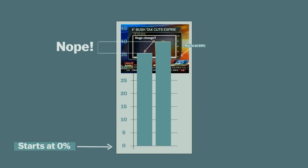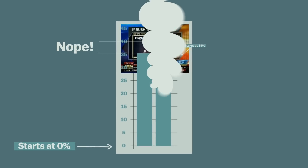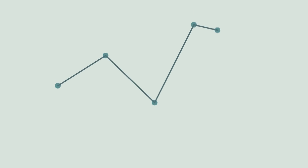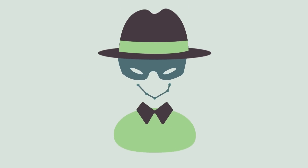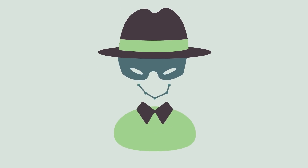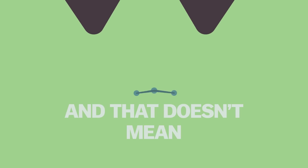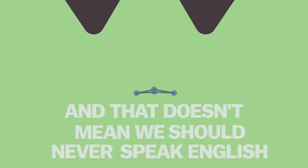But the y-axis dogmatists take it way too far. The big problem with the people who lie with statistics is that they're lying to you. It's true that misleading charts are one way to lie, but the English language is also a tool that can be used for lying, and that doesn't mean we should never speak English.